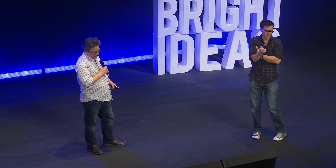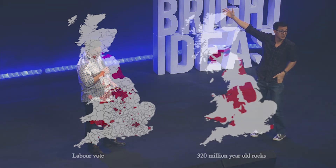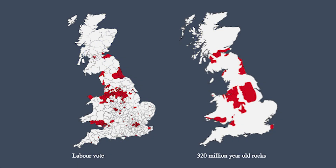There's a very good example very close to home as well, with Labour-vote constituencies on the left tending to vote for the left. And on the right-hand side are rocks beneath our feet which just happen to be 320 million years old. Again, there's this incredible correlation.